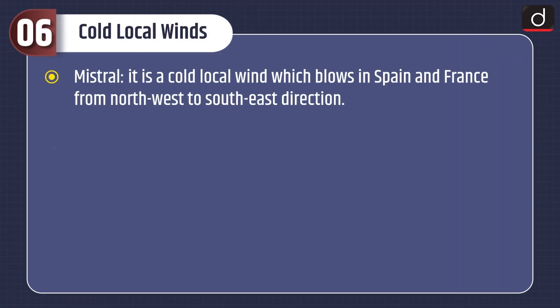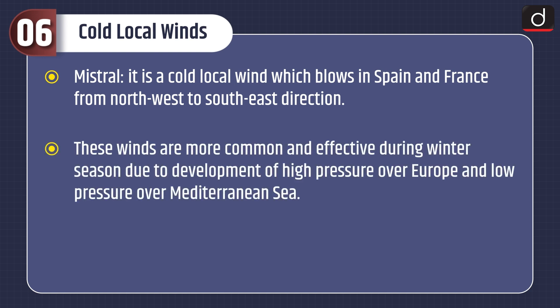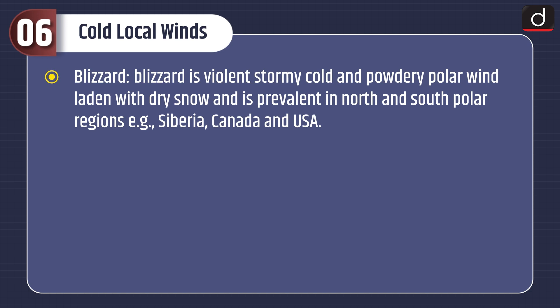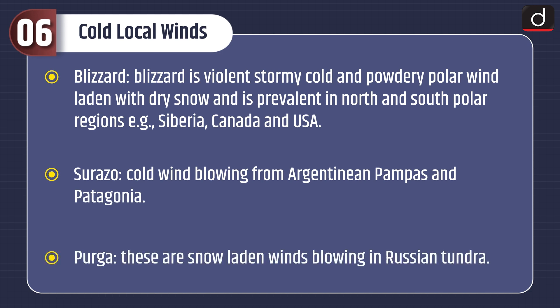Cold local winds: Mistral is the cold local wind which blows in Spain and France from north-west to south-east direction. These winds are common and effective during winter season due to development of high pressure over Europe and low pressure over the Mediterranean Sea. Bora is an extremely cold and dry north-easterly wind which blows along the shore of the Adriatic Sea. Blizzard is a violent, stormy, cold and powdery polar wind laden with dry snow, prevalent in north and south polar regions, e.g. Siberia, Canada and the USA. Surazo is a cold wind blowing from the Argentinian Pampas and Patagonia. Purga are snow-laden winds blowing in the Russian tundra.